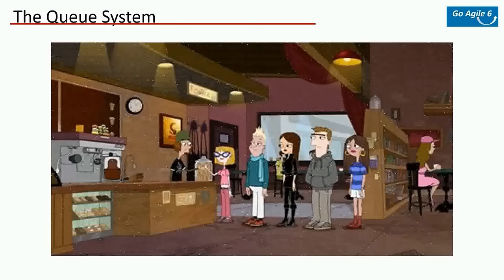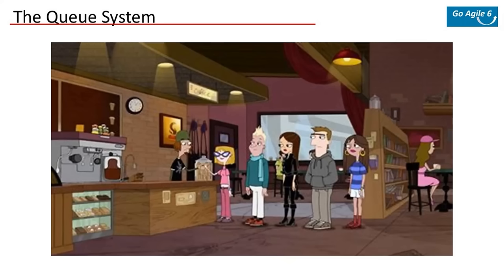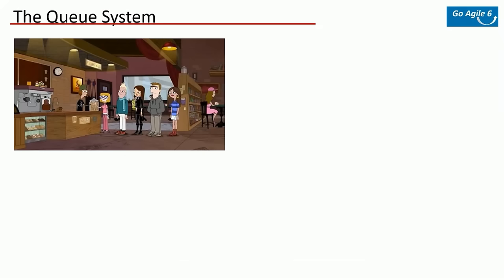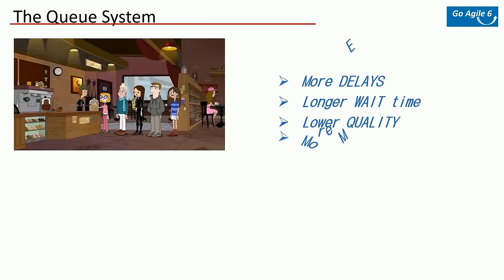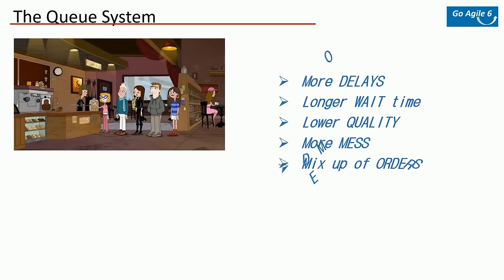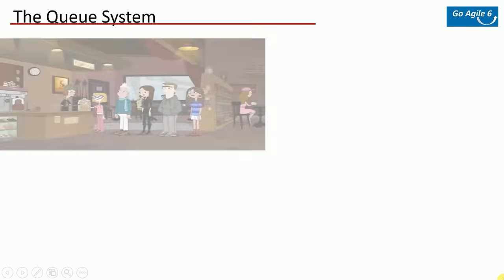Now let's study the queue system. Imagine a coffee shop with customers walking in to order. When more people come in, the queue becomes longer — which directly translates to delays. It increases wait time, the quality of coffee could be compromised, there could be spills, wrong orders, and the person making it could be demotivated.